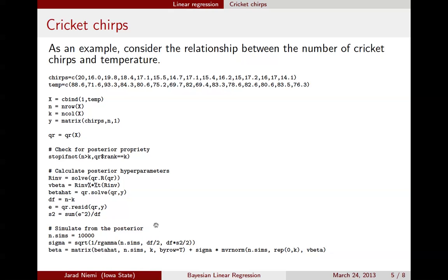Then finally, we go ahead and simulate from the posterior. You should go ahead and verify that it makes sense to you how this equation works to get draws from beta without having to loop through all the values for sigma.